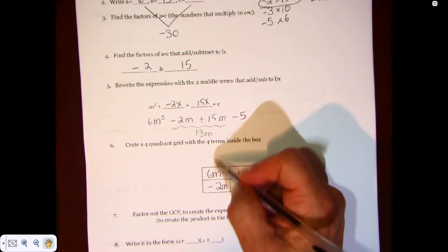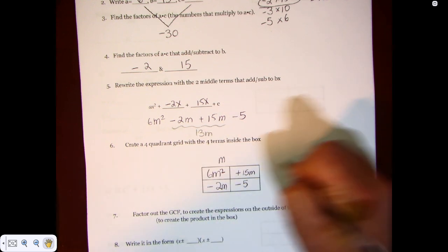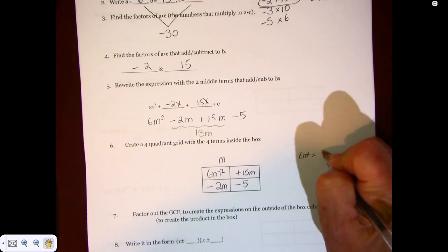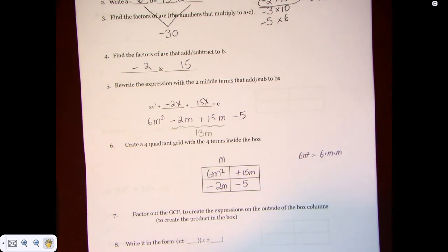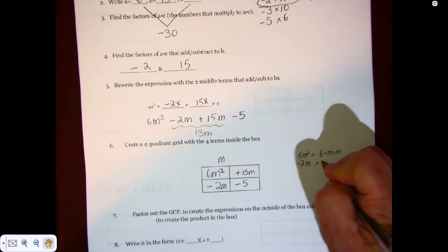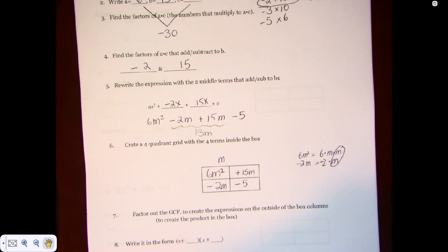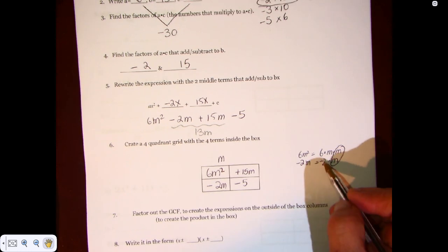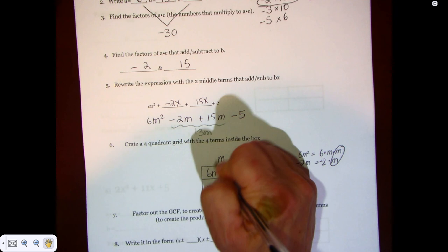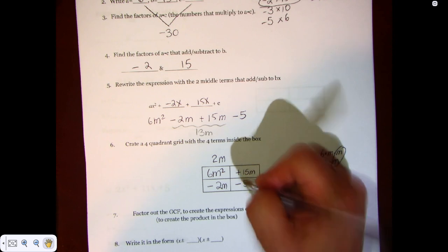Now we're going to start by factoring out the column. What they have in common, they both have an m in common. Because don't forget, 6m squared is equal to 6 times m times m. Negative 2m is equal to negative 2 times m. What do they have in common? An m. What does negative 6 and 2 have in common? It's a 2. So I'm going to pull out the 2 over here.